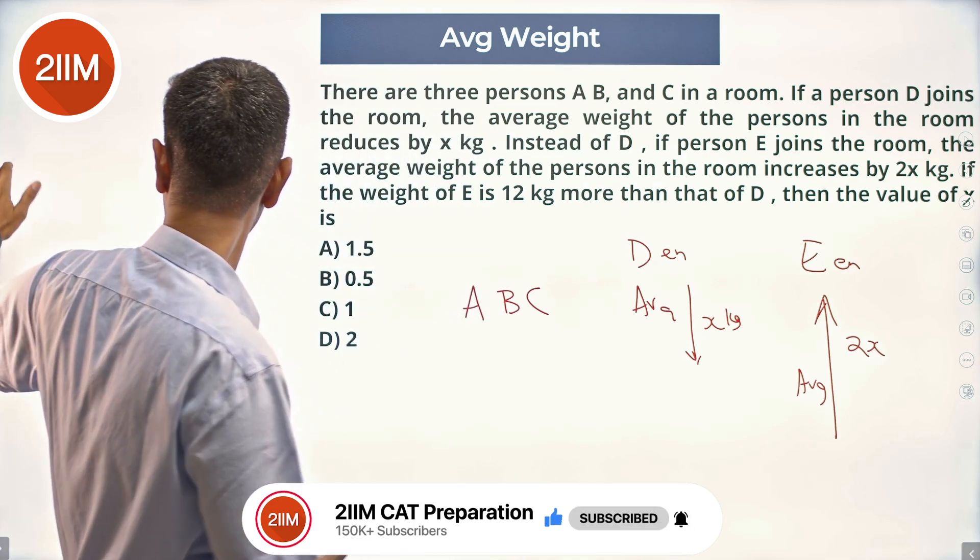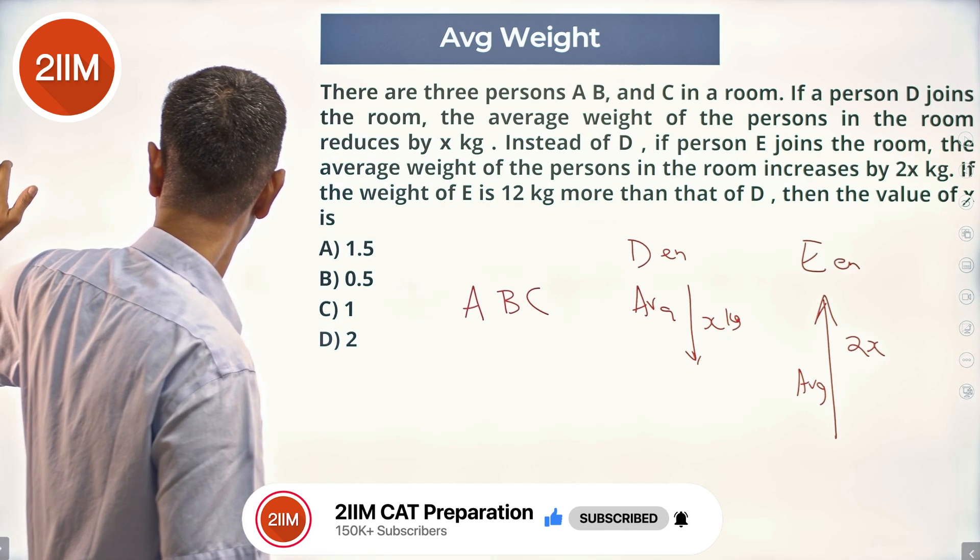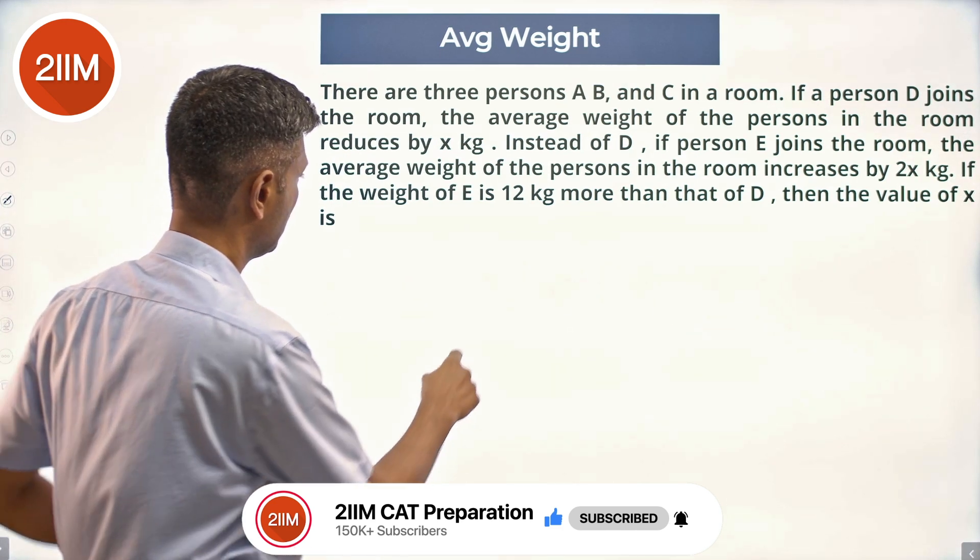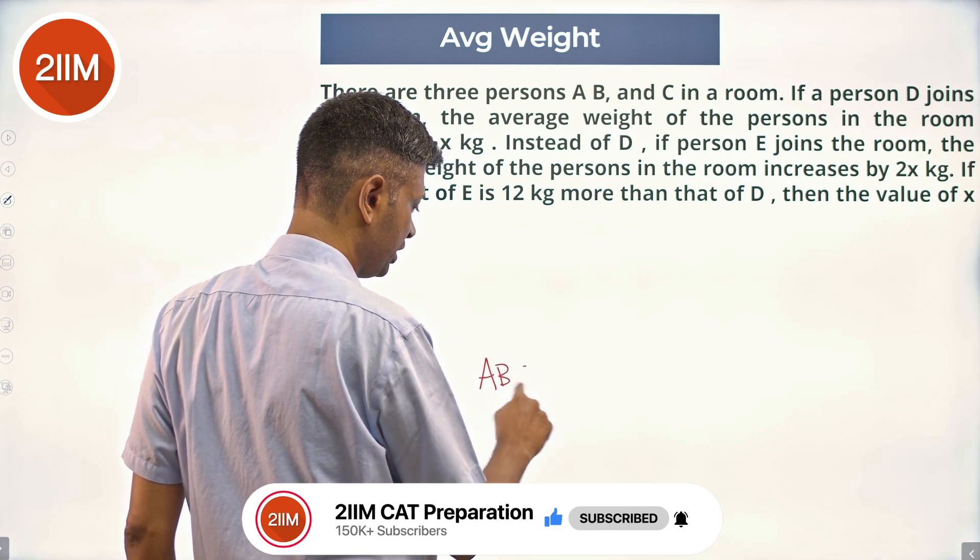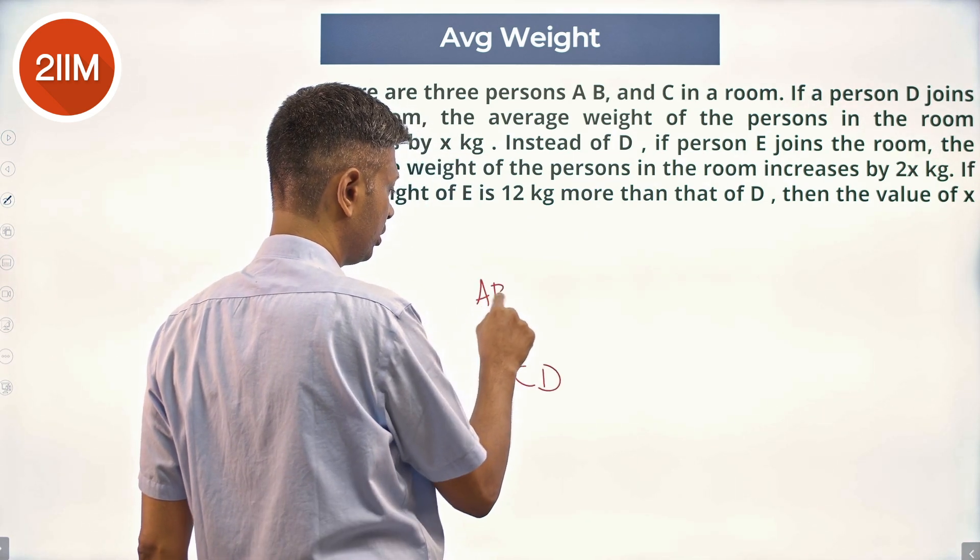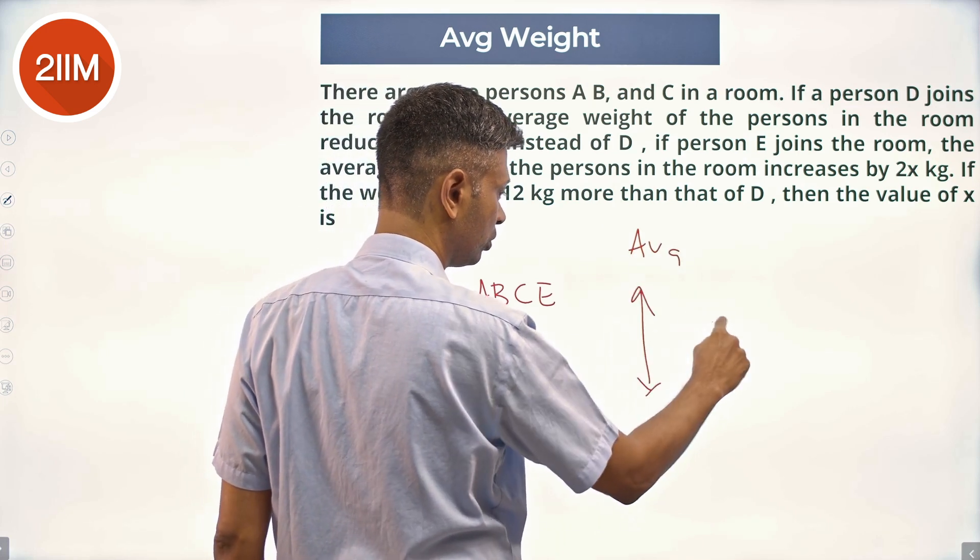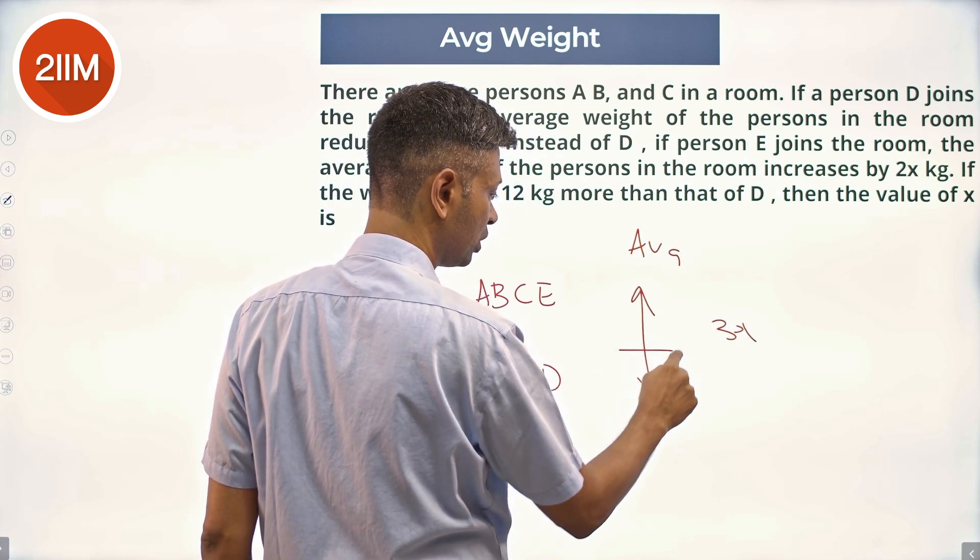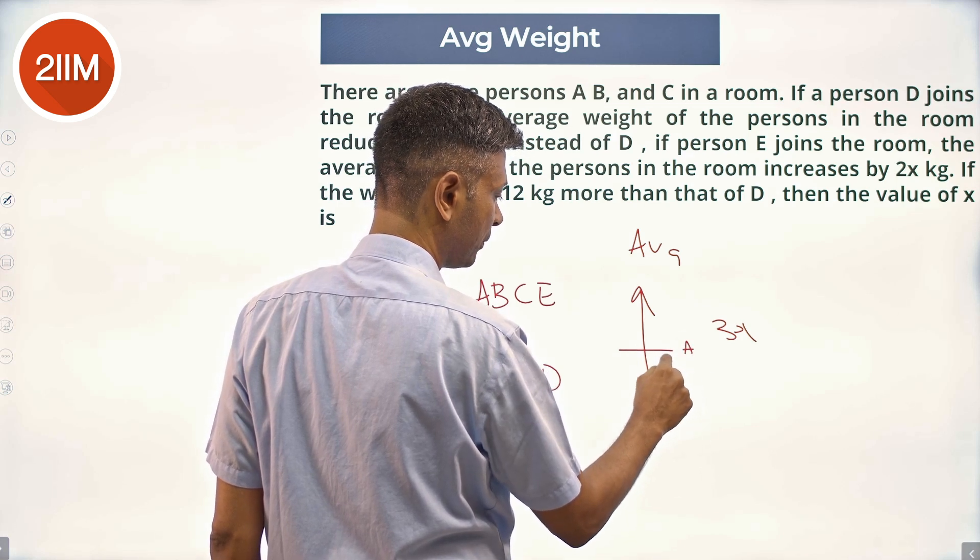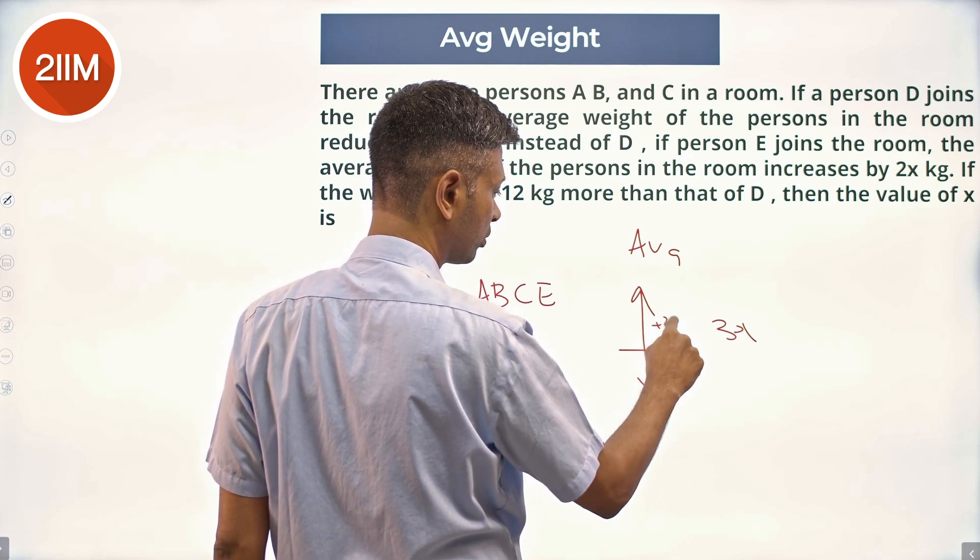So if I think about this, I have A, B, C, D and A, B, C, E. The average difference between these two is 3x. The original average was somewhere here - this is minus x, this is plus 2x.